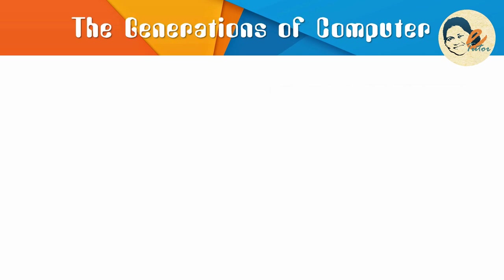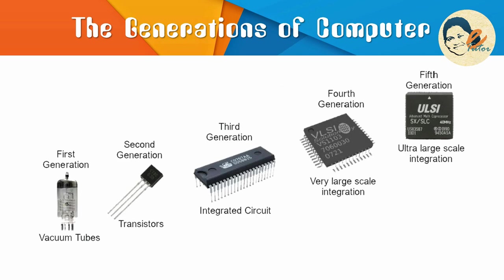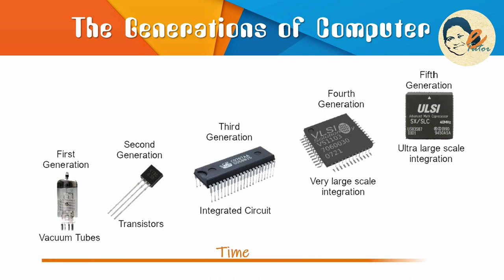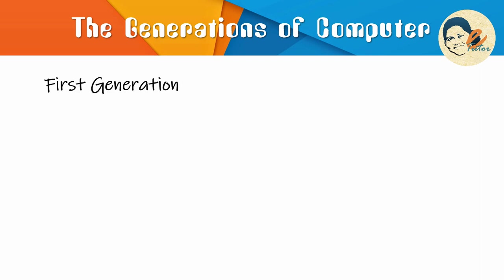Now let's discuss the generations of computer in a brief timeline. The term generations refers to significant hardware and software development. Each generation lasted for a certain period of time and gave us more improved, compact, less expensive but more powerful, as well as efficient and robust machines.